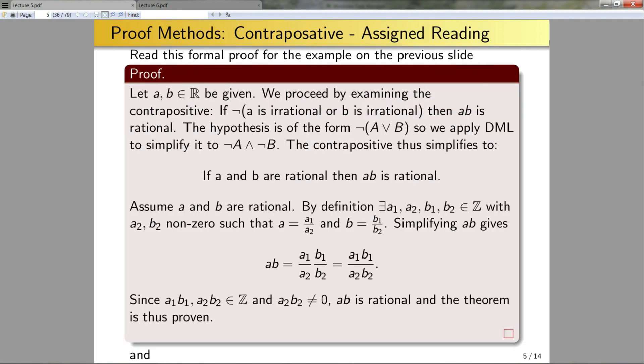Now some assigned reading for the contrapositive. I want you to read this formal proof for the statement on the previous slide. So notice here I explicitly state that these terms are non-zero, and I do mention that this product here is not zero. In addition to this formal proof, I want you to read the proof of claim 7 on page 23 of the course notes.